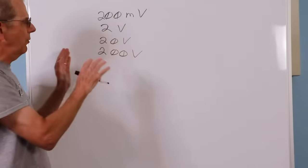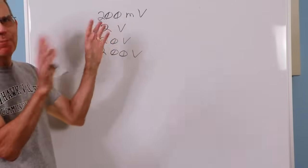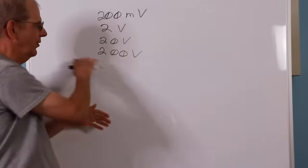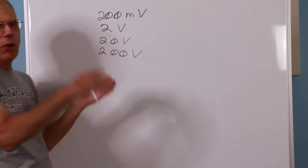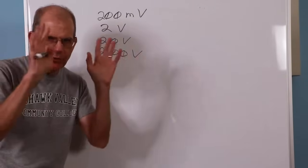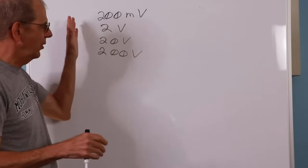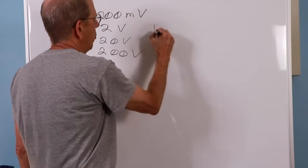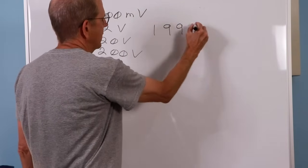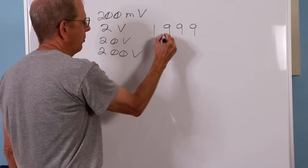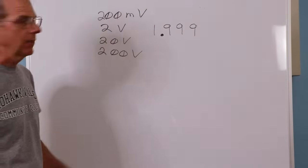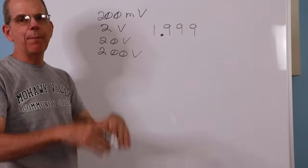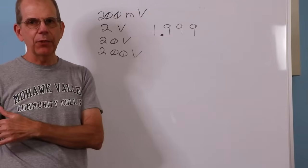We don't call it 199 millivolt scale, or 199 volt scale. We just say, okay, it's 2,000 counts, so even though it can't do exactly 2 volts, it's going to be pretty darn close to it, so we just call that a 2 volt scale. So what this means is, the 2 volt scale for example, is we have this 1, 9, 9, 9, and we're going to put the decimal point right there.